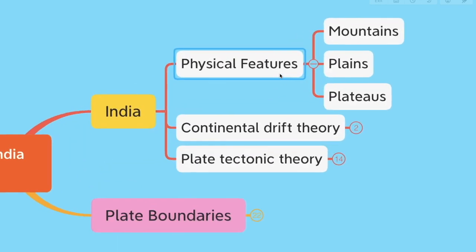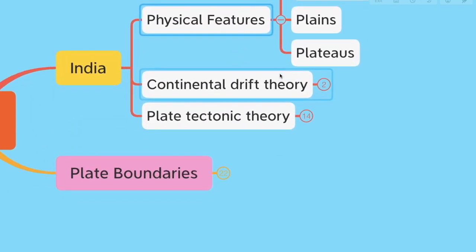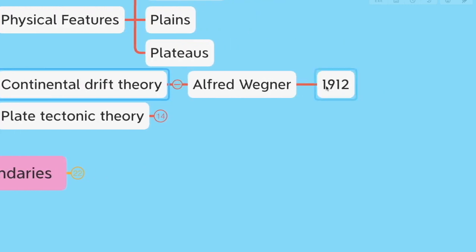I want you to understand two theories. The first one is continental drift theory and the second one is plate tectonic theory. Continental drift theory was proposed by Alfred Wegener in 1912. According to him, in the past all the continents were as one, with mega oceans surrounding it. The supercontinent was called Pangea and the mega oceans surrounding it were called Panthalassa.